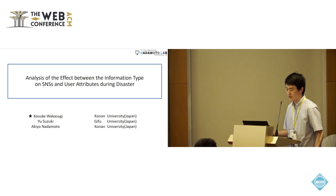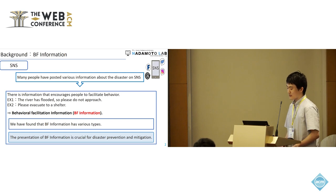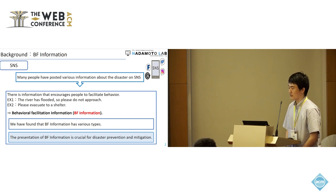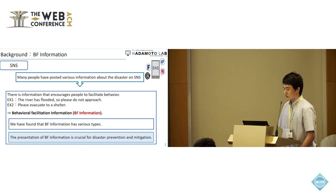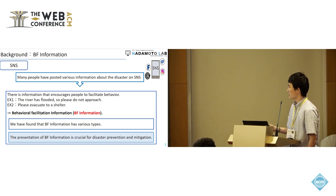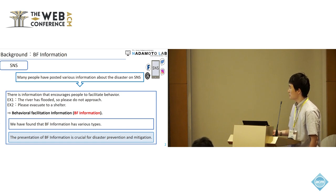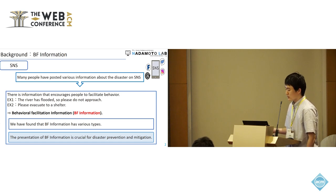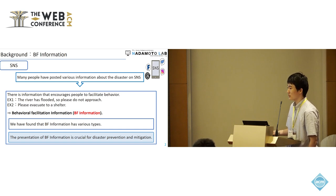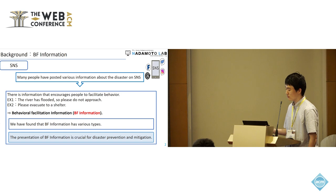When a disaster has occurred, many people have posted various information about the disaster on SNS such as X. Among such information, there is information that encourages people to facilitate behavior — for example, 'the river has flooded so please do not approach' or 'please evacuate to a shelter.' We call such information behavior-facilitating, or BF information. We found that BF information has various types and we believe that the presentation of BF information is crucial for disaster prevention and mitigation.